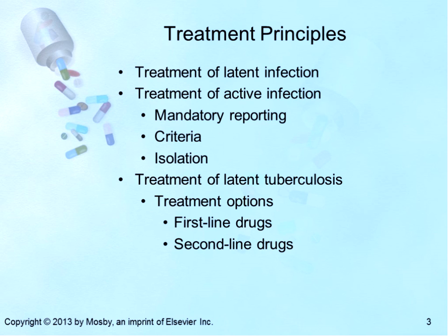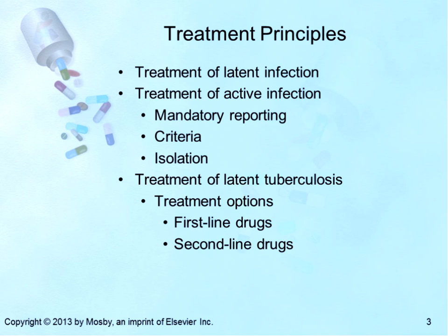TB is caused by Mycobacterium tuberculosis, a thick-walled bacterium. The primary route of infection is inhalation of infectious particles. The bacilli are also spread to the lymphatic system and may lodge in the bone, bladder, or central nervous system. A cell-mediated immune response results in tubercle formation. The focus here is on drugs used to treat patients with latent tuberculosis infection, which is the important component of primary care. TB is a highly contagious, reportable disease whose treatment should be initiated by an infectious disease specialist.